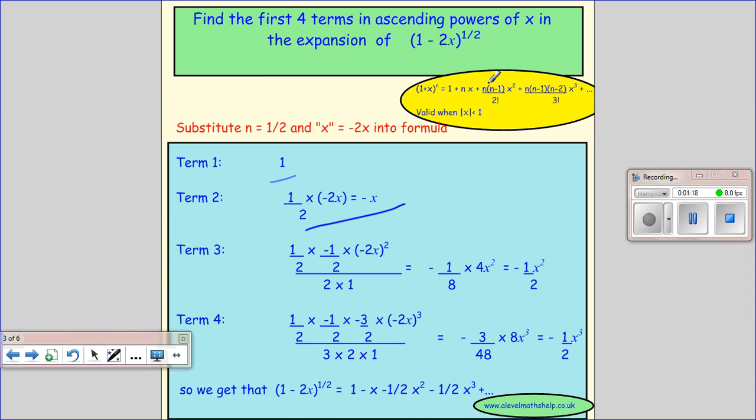Third term is n times n minus 1, so that's a half times minus a half. A half take away 1 is minus a half. And then times x squared, so that's minus 2x all squared over 2 factorial, that's 2 times 1, and you can work that out to get this.